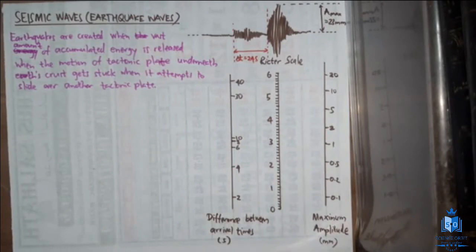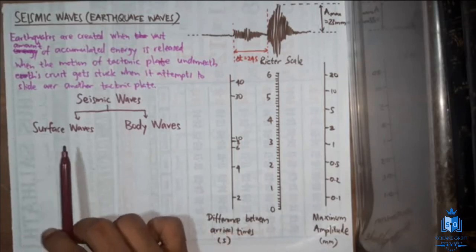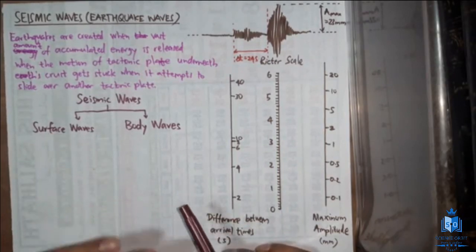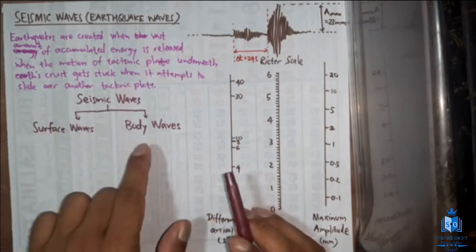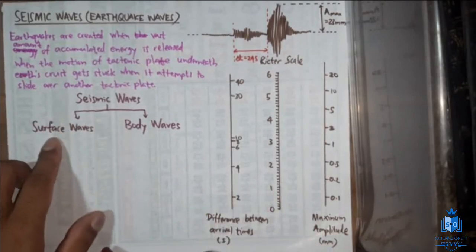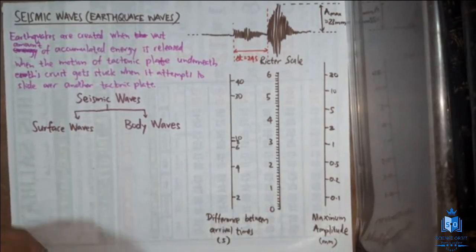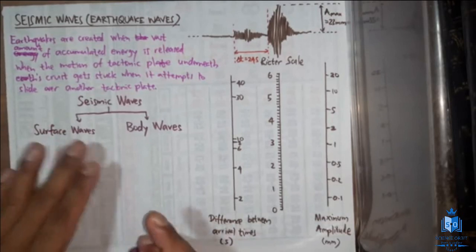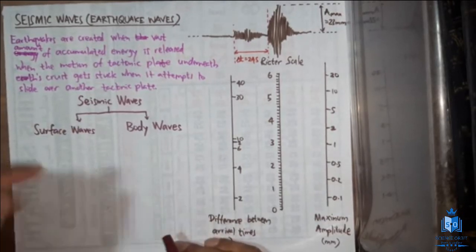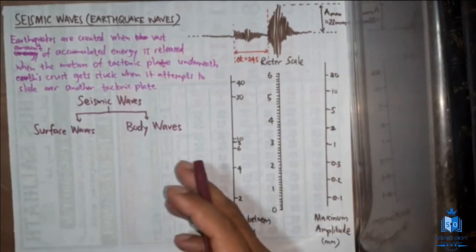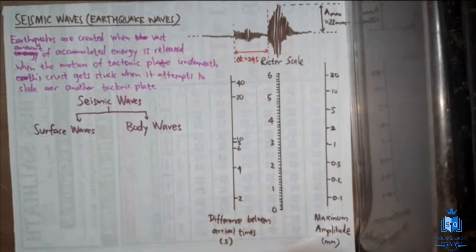When it comes to seismic waves there are two major categories: surface waves and body waves. Surface waves propagate only on the surface of the earth, while body waves propagate underneath the surface. Surface waves are the most harmful waves because they are the ones that knock over buildings, since buildings are erected on the surface of the earth.